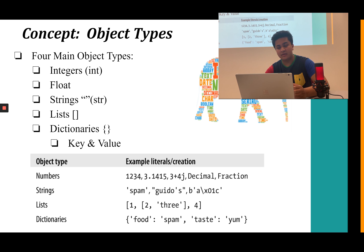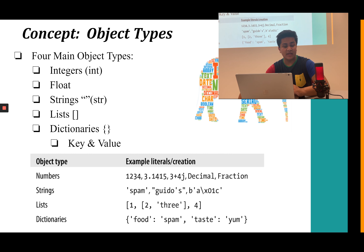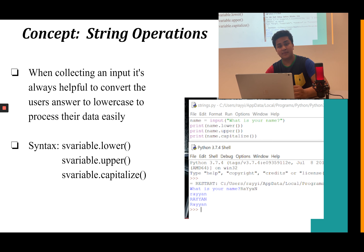Before we begin and take a full dive into loops and lists, let's review the object types discussed in the last tutorial. There are five main object types in Python: integers, which are whole numbers; floats, which are decimals; strings, which are any arrangement of characters or numbers; lists, which contain strings, floats, and integers; and dictionaries, which are similar to lists but have a key and value concept.